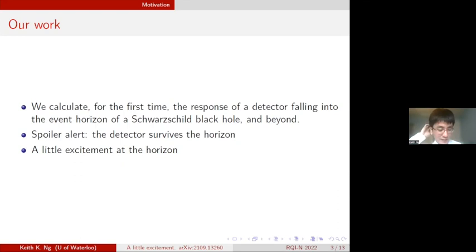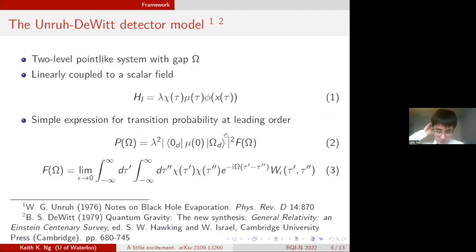But first, a bit of framework. We're working with the Unruh detector model, a two-level point-like system with a gap omega. It's essentially an atom. We linearly couple it to a scalar field. This is a simplified model but it captures most of the essential features of electromagnetic interaction, and it is easier to work with.